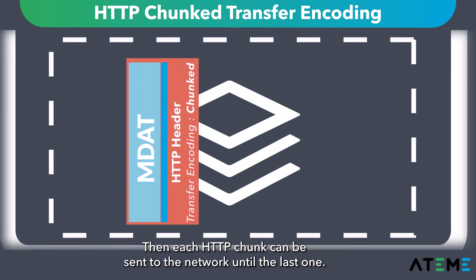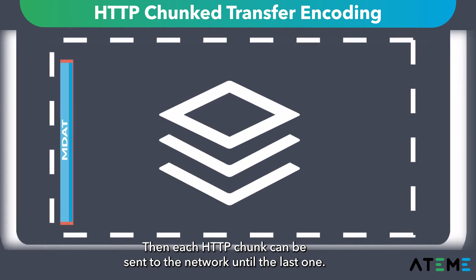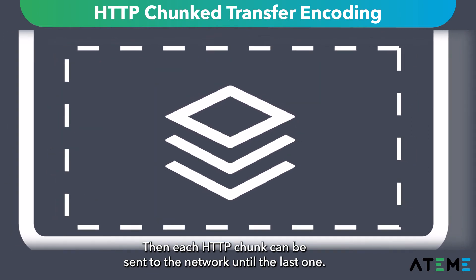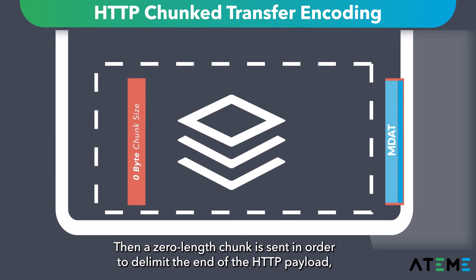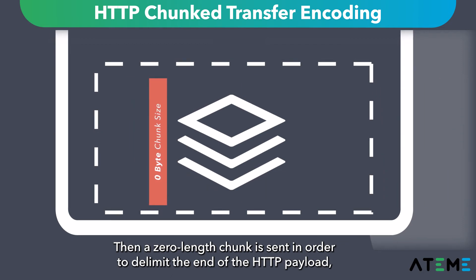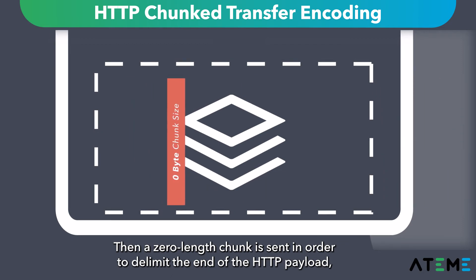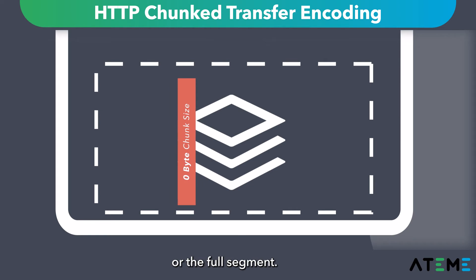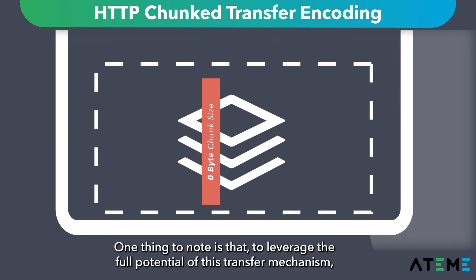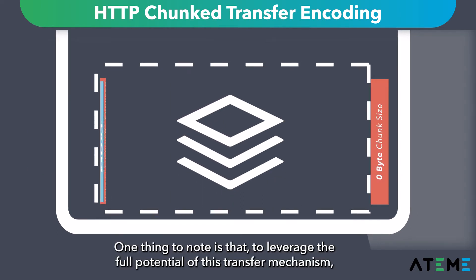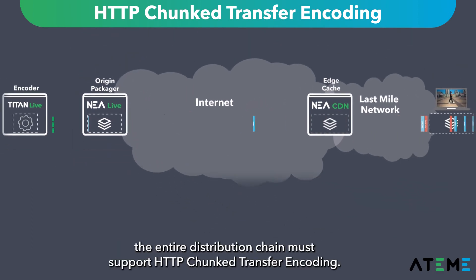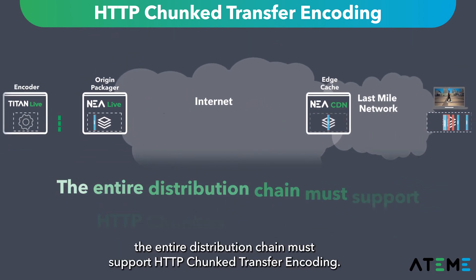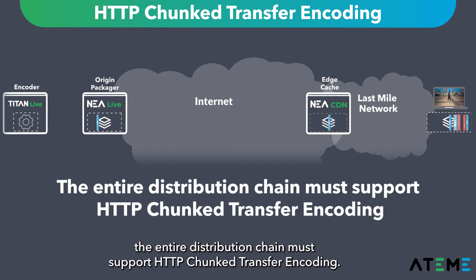Then each HTTP chunk can be sent to the network until the last one. And then a zero-length chunk is sent in order to delimit the end of the HTTP payload, or the full segment. One thing to note is that, to leverage the full potential of this transfer mechanism, the entire distribution chain must support HTTP chunk transfer encoding.